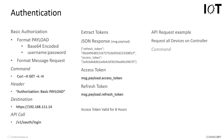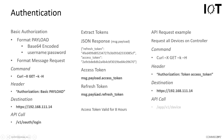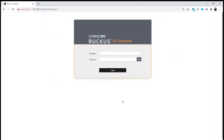The next example shows how to use those tokens. We again use a curl command — curl -x GET -kH — but this time instead of using 'Basic' we use a token-based authorization, providing the access token. The destination and API call in this case would be 'app/v1/device', which will list all devices on the IoT controller.